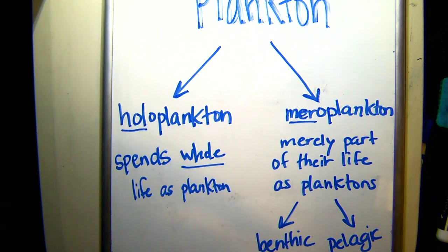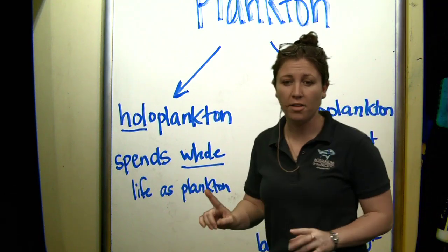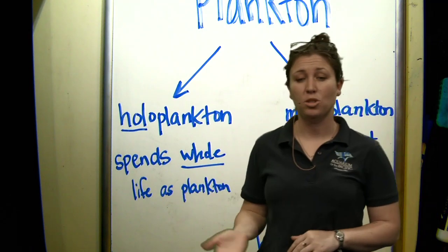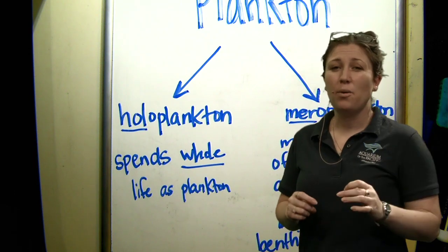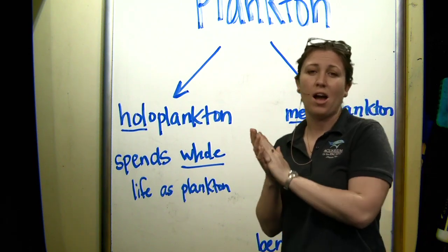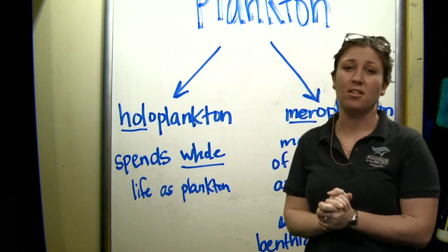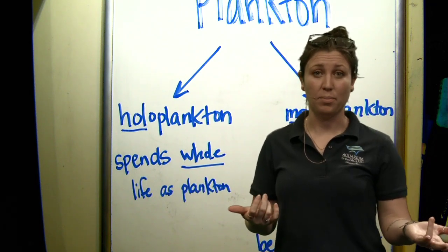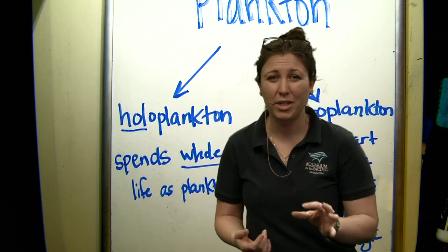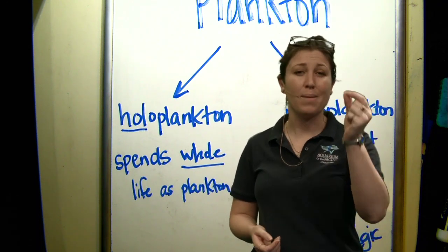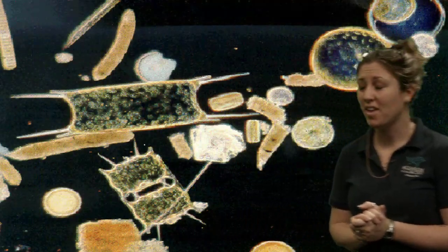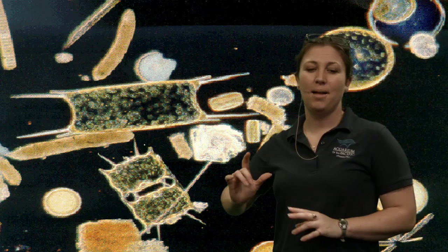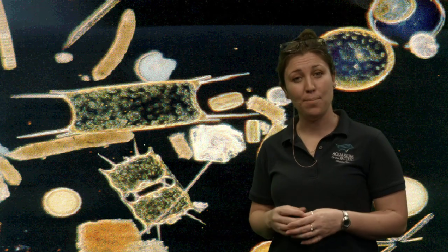Knowing the definitions of these two groups, where do you think jellies fall? Are they meroplankton, spending only part of their life as plankton? Or are they holoplankton, spending their whole life as plankton? Now, jellies at one point are sessile — attached to a rock when they're little. But for the most part, their whole life cycle they are spending as plankton once they're growing into adults. So I like to think of them as holoplankton.